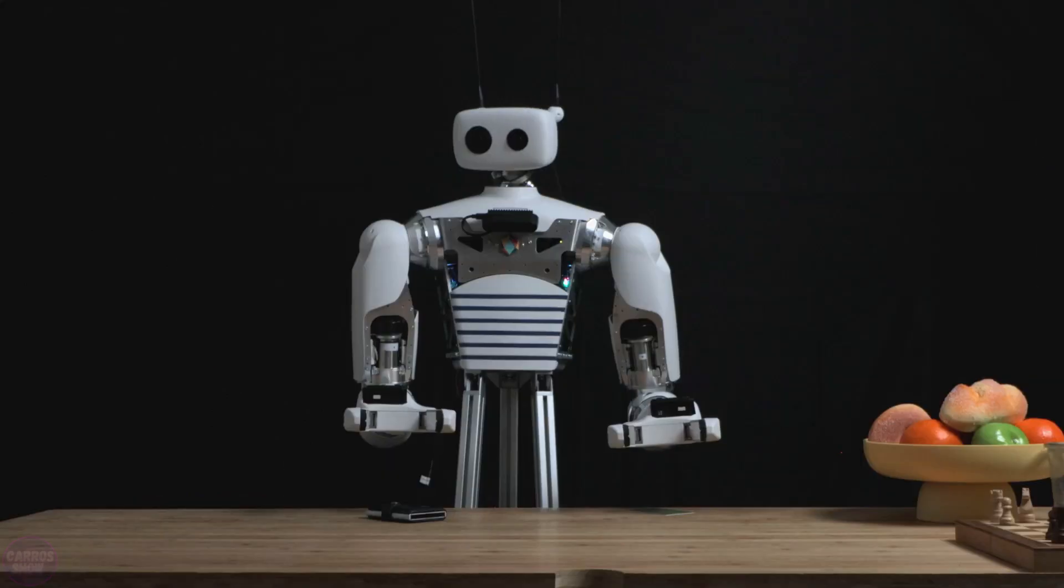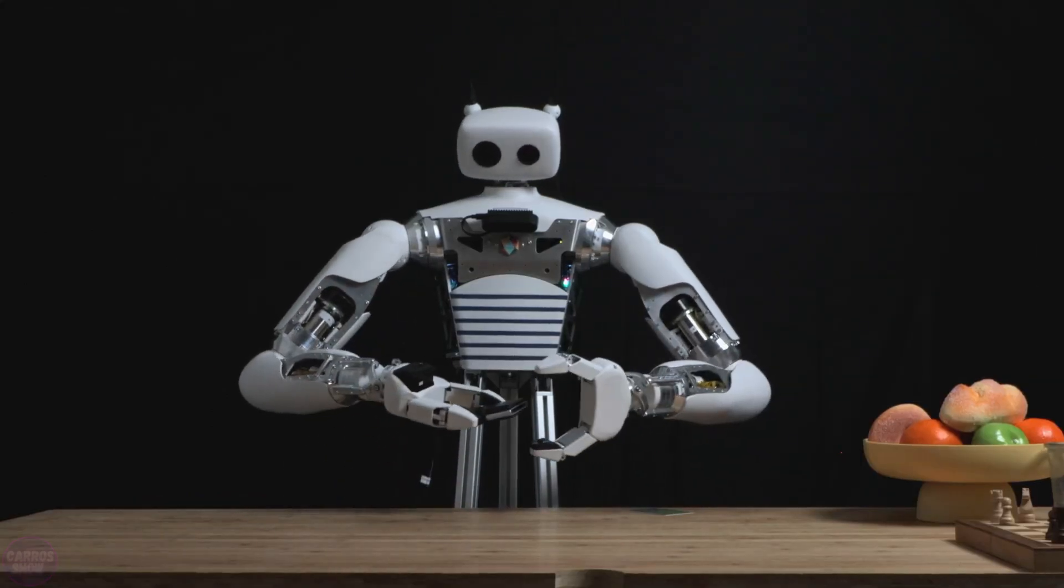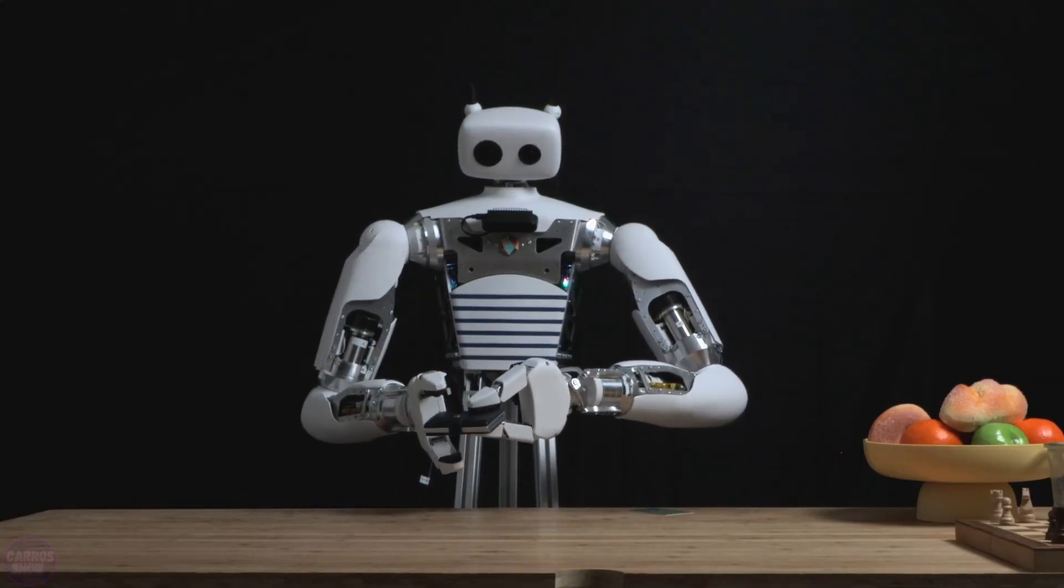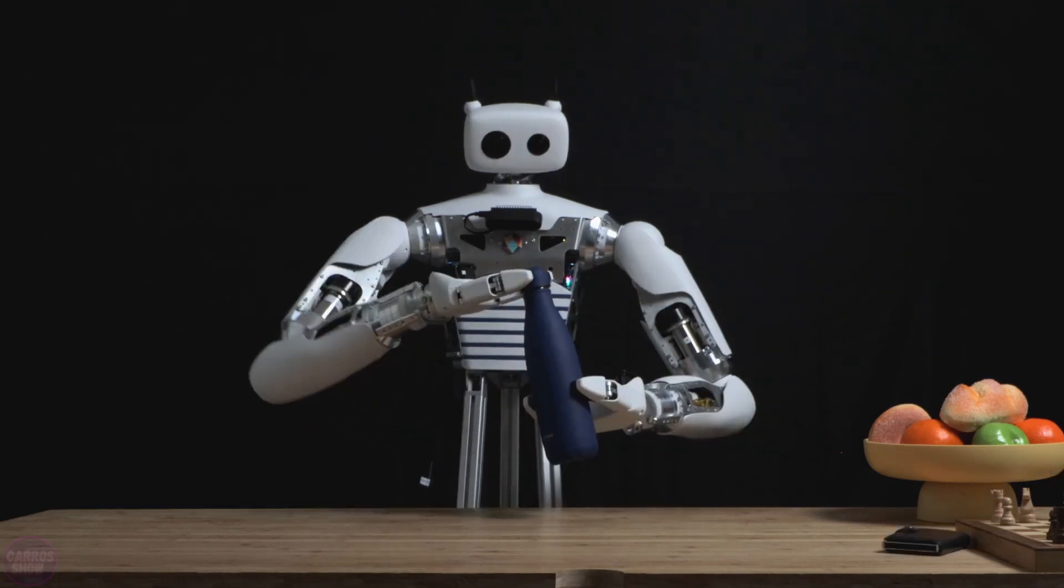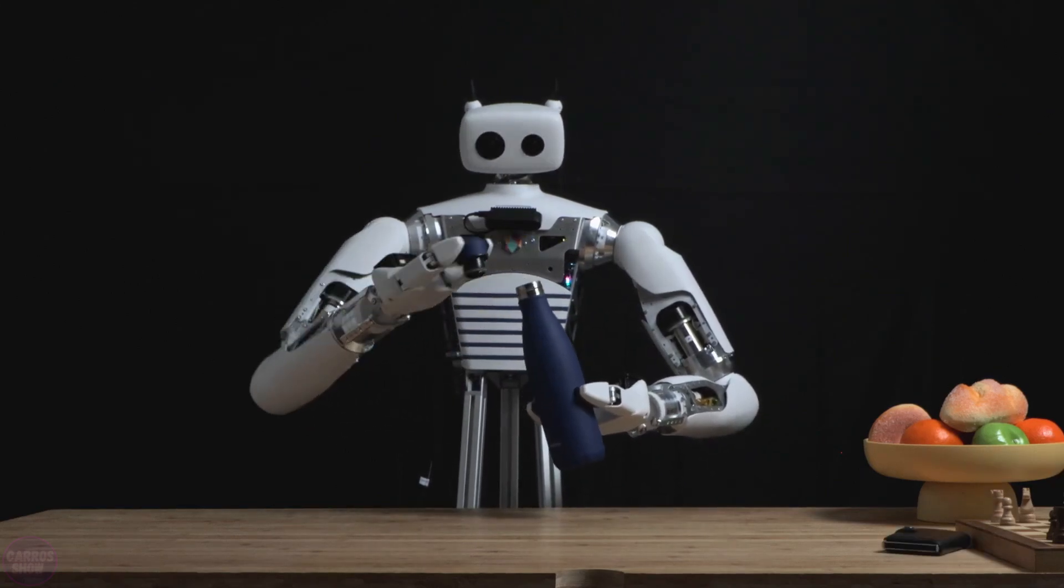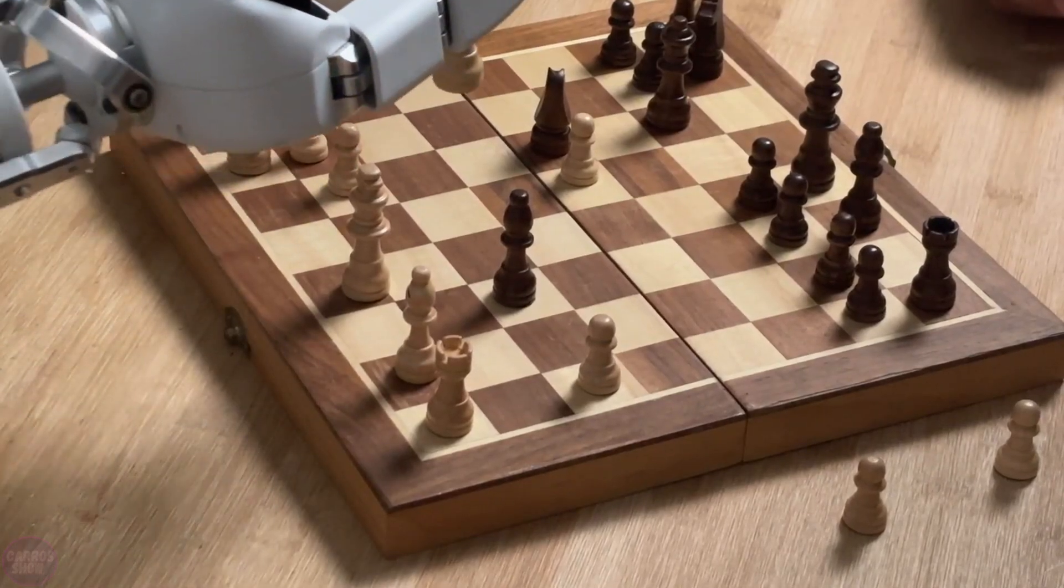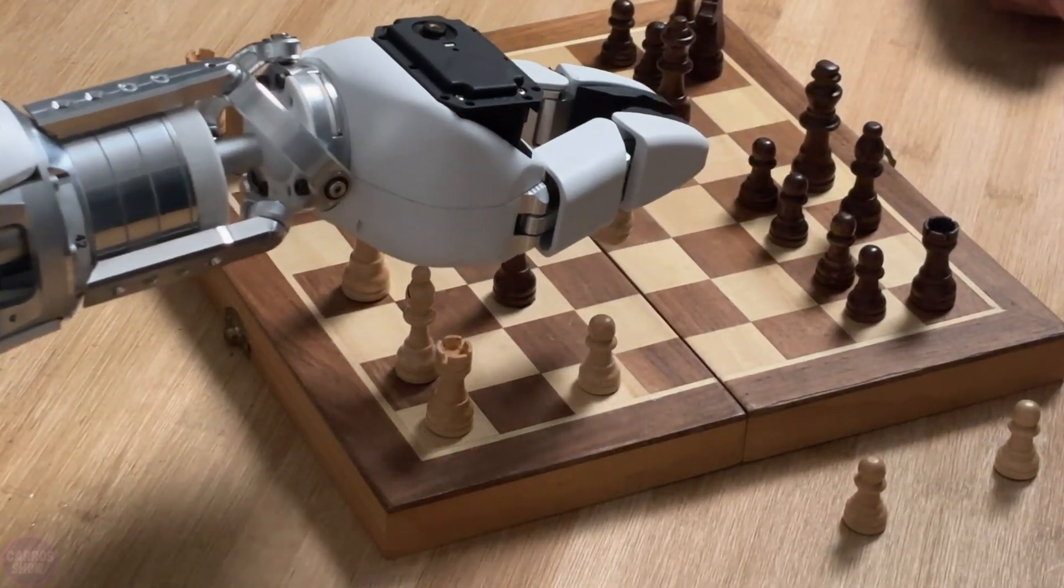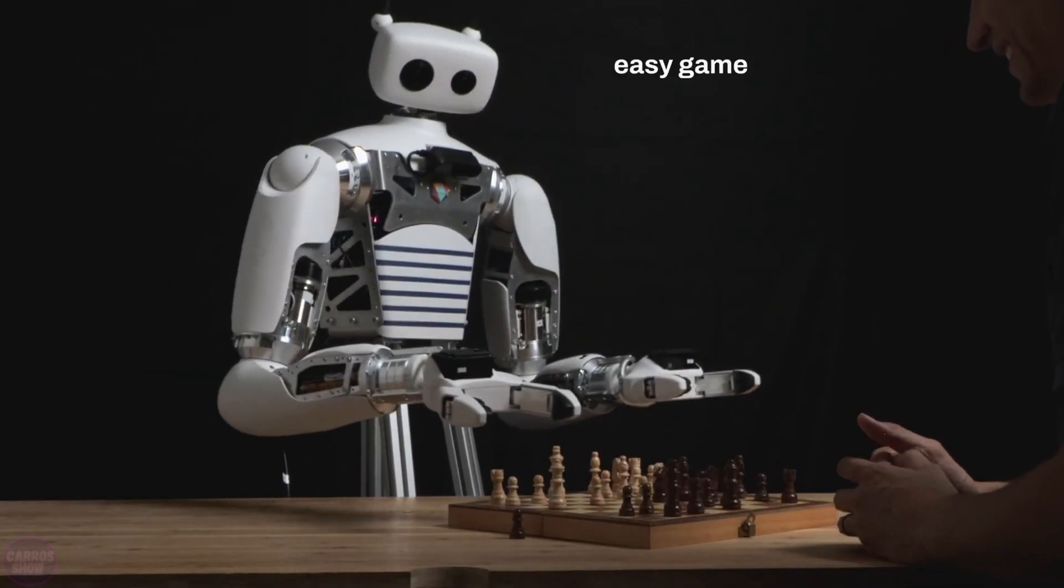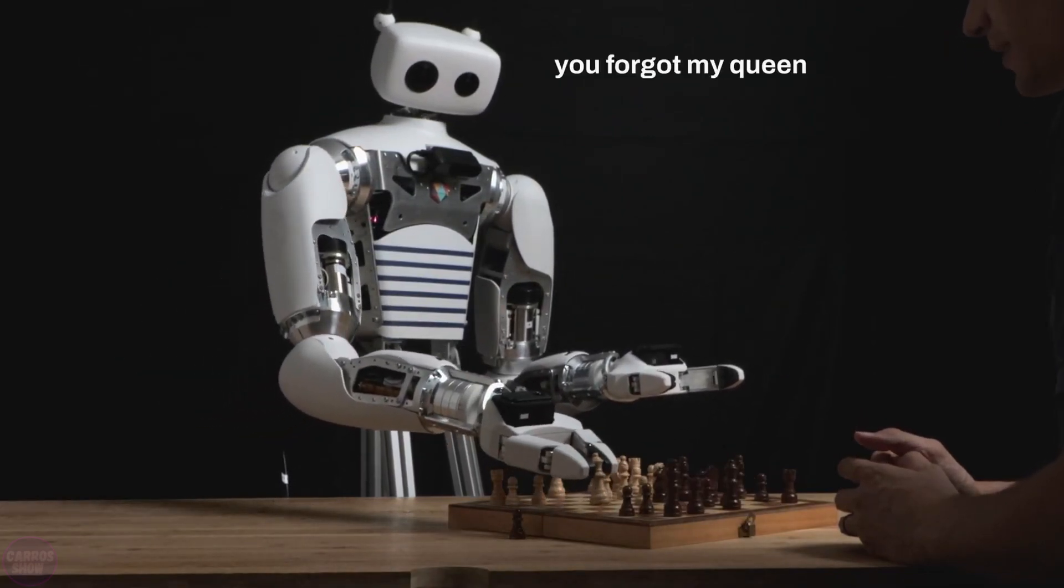Initially, a human controlled the robot remotely by wearing a virtual reality headset, demonstrating how to perform various tasks. The machine learning algorithm then analyzed 50 video recordings of these teleoperation sessions, each lasting around 15 seconds. After 40,000 to 60,000 training iterations, Ricci too mastered complex sequences of actions.